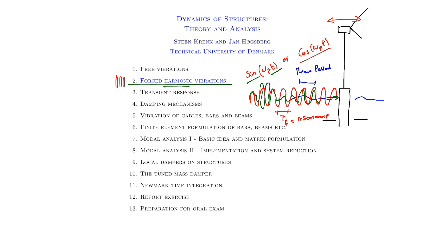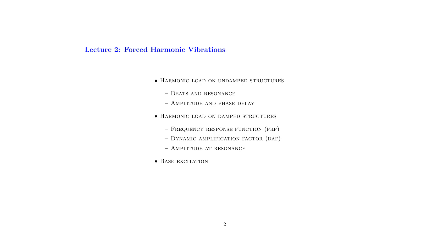Next time we will look at all other types of loads — those that are transient. Next time we will focus on impact loading as one of the non-harmonic load cases you could encounter in real life. To build up our case, we will initially have a look at the undamped structure. In particular, we should be careful about beating — that is something you see in nature. And also, of course, the very important topic of resonance.